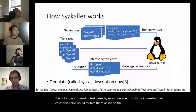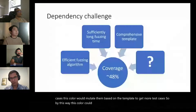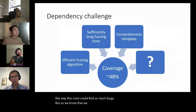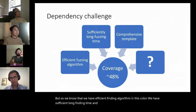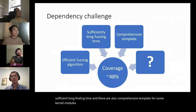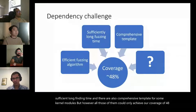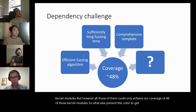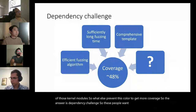With an efficient finding algorithm, sufficient fuzzing time, and comprehensive templates for some kernel modules, Syzkaller could still only achieve coverage of 48% of those kernel modules. So what else prevents Syzkaller from getting more coverage? The answer is the dependency challenge. This paper aims to figure out the root causes behind the dependency challenge in kernel fuzzing.